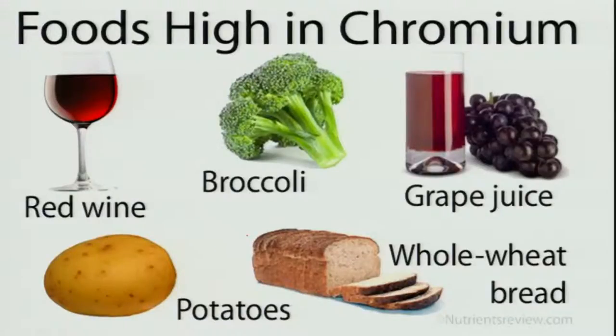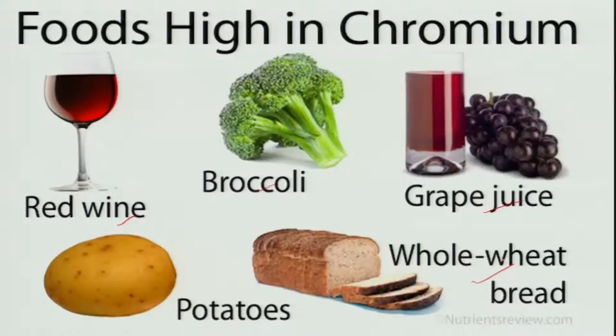Foods high in chromium include red wine, broccoli, grape juice, whole wheat and whole grains, and potatoes — which are rich in minerals and vitamins especially when eaten with the peel.